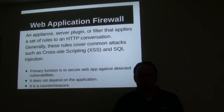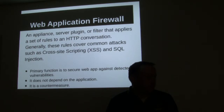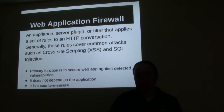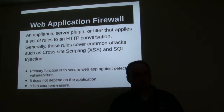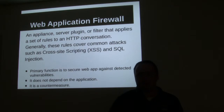FuseGuard comes out of the box with maybe 15 to 20 filters. You can set the security levels on what you want to block and what you want to log. These block cross-site scripting and SQL injection. A web application firewall is primarily used to secure a web application and detect vulnerabilities. It works really well with existing code — you don't have to touch any of your old code, and you could feel a lot more secure.